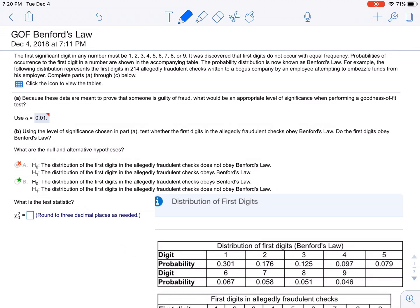...what would an appropriate level of significance be? We would want that to be the lowest one, 0.01. Our default one is 0.05, so we'll go with 0.01. Part (b): Using the level of significance chosen, test whether the first digits in the allegedly fraudulent checks obey Benford's Law.